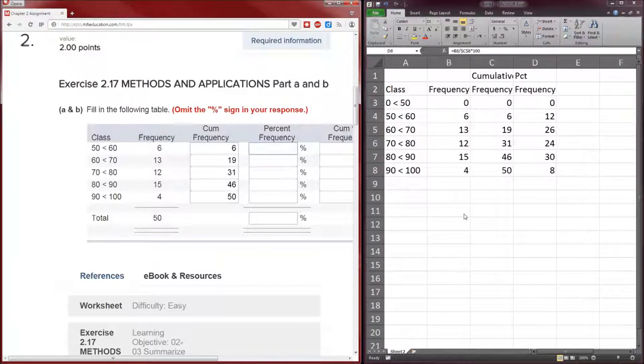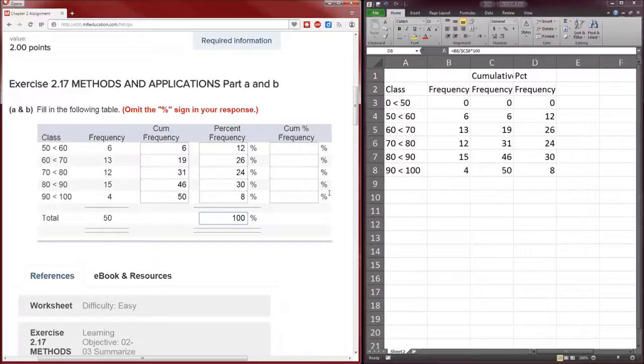So I'm going to copy that, paste, and that gives us numbers that really do make sense. So 50 to 60 is 12, 26, 24, 30, 8. And the total percent? It better be 100.